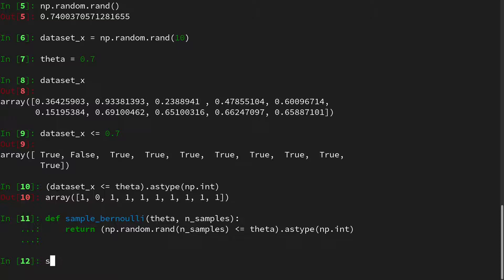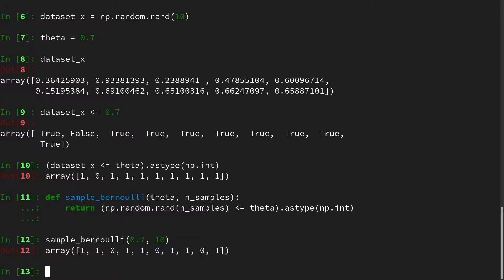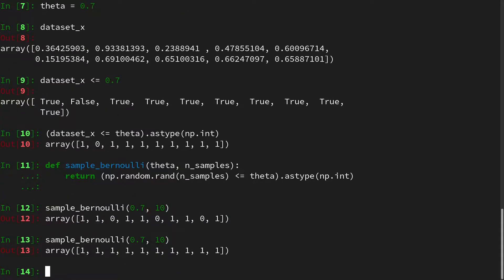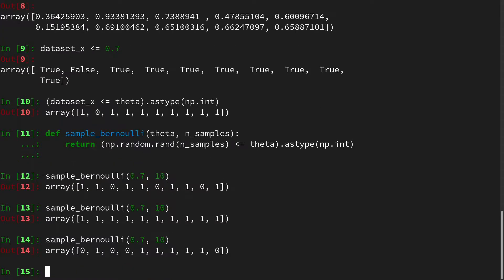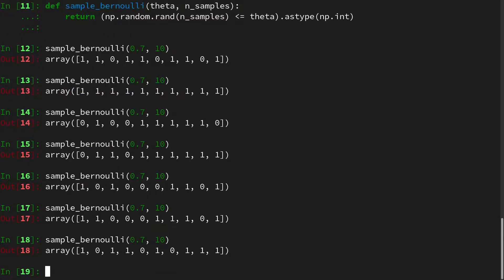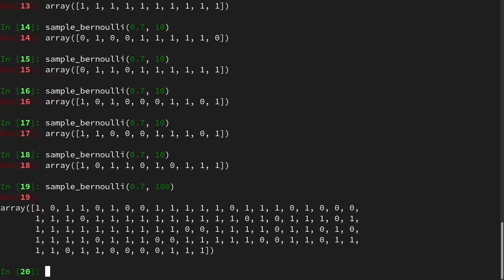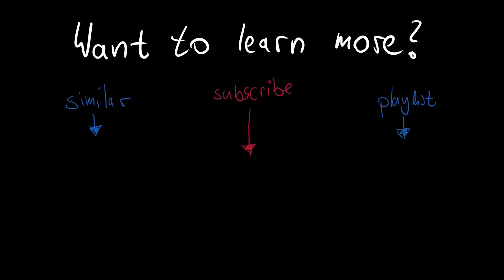And we can call it, for instance, with our 0.7 again. And let's say 10 samples. And then we are getting this. And the idea of this random variates is that the return is random that we get. So if we execute a function again, then we are getting different outcomes. And of course we can also increase the numbers and get more. This is the end for the video on how to sample the Bernoulli distribution. Here you see similar videos. And you have the chance to subscribe to this awesome channel. See you next time.